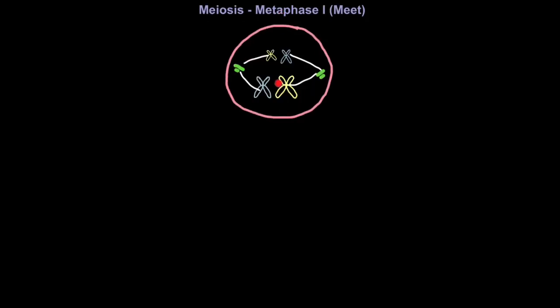So chromosome 1 from your mother will line up with chromosome 1 from your father. And chromosome 2 from your father will line up with chromosome 2 from your mother. It doesn't necessarily mean that all mothers' chromosomes line up on one side and fathers on the other. They're randomly shuffled. And this, again, adds as a source of variation. Because you don't know whose chromosomes will be packaged into a specific gamete.